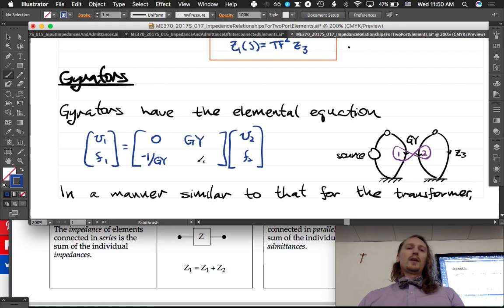And the gy is called the gyrator ratio, or gyrator modulus.